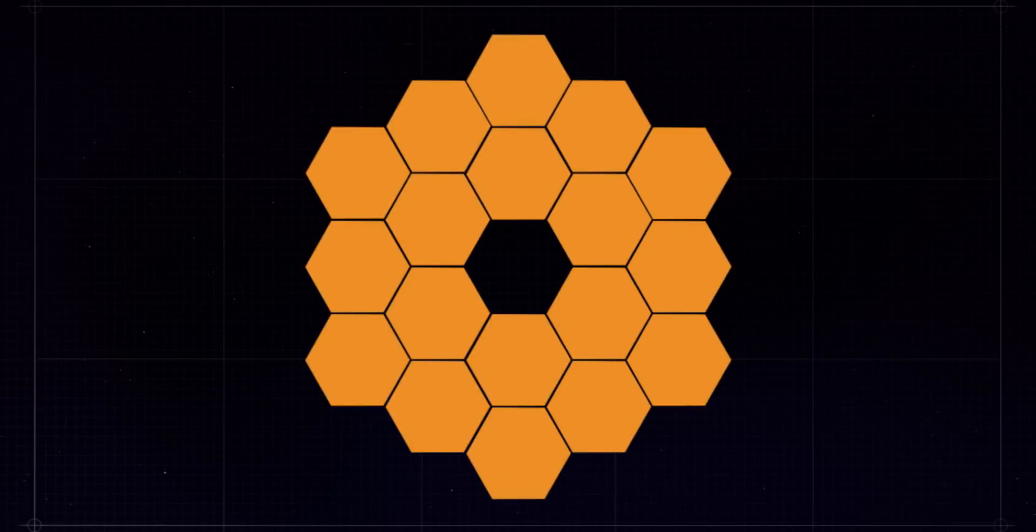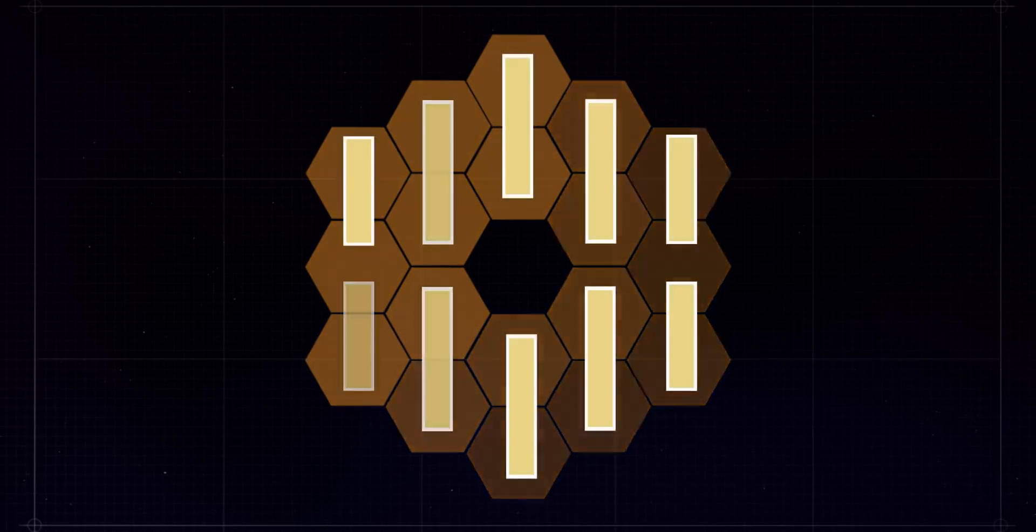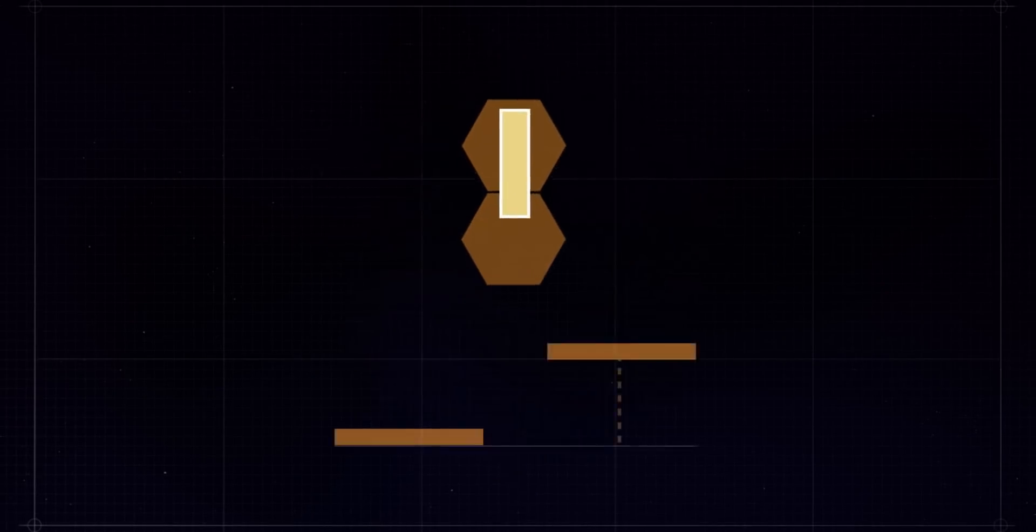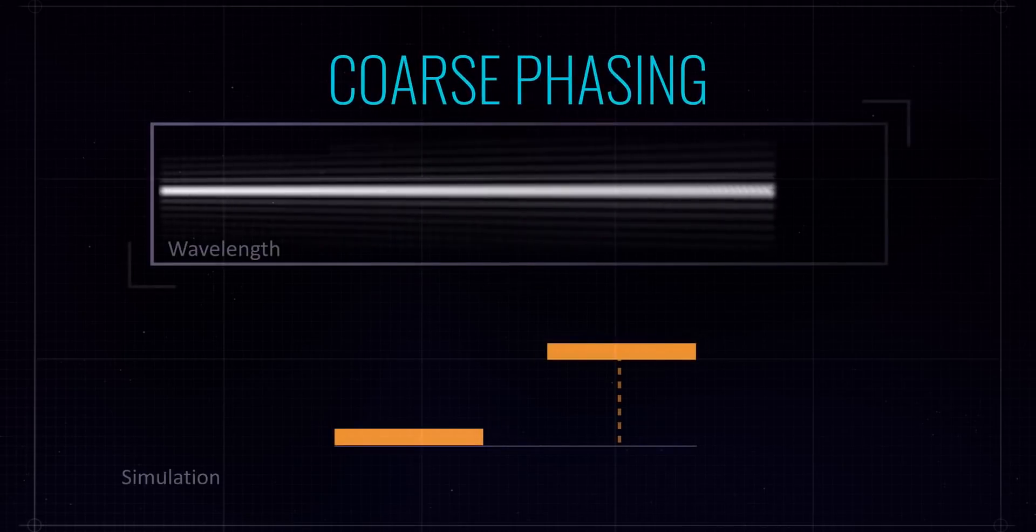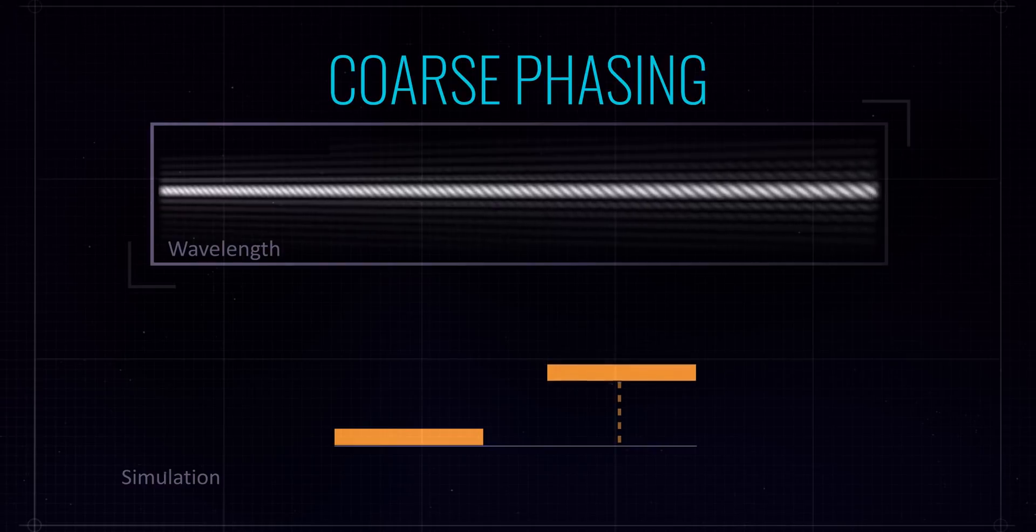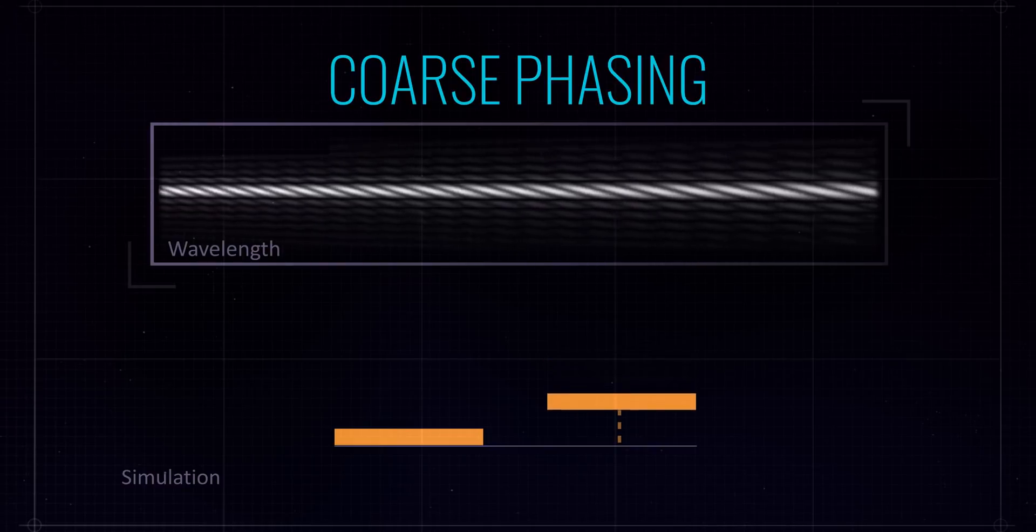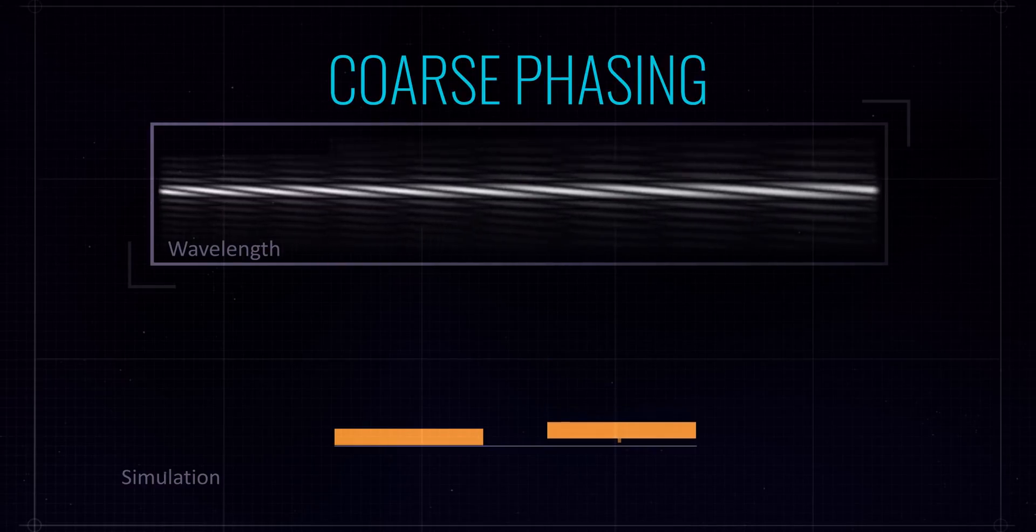And the next phase in the process is something we call coarse phasing. And that's where we adjust, literally, it's the piston—the up and down motion of the mirror segments relative to each other. We control the piston of the segments so that they all come together in creating a complete monolithic primary mirror.